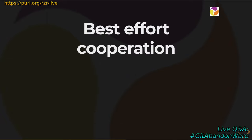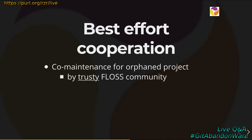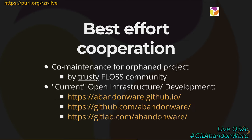Here comes our best effort cooperation. The idea is how can a community try to maintain a project which is abandoned and still provide trust. I'm using patterns from famous open source projects. Everything is open to anyone — development is not behind closed doors, everything is in public. We are mostly using GitHub, but we can move to different organizations and it can be replicated. It's just a concept.